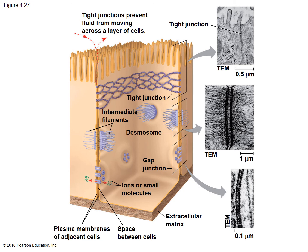Here we see all of these different connectors put together. You have the tight junctions, the desmosomes, and the gap junctions shown with where you could find each. They show how small ions or small molecules would move across the gap junctions. For the desmosomes, they show you the intermediate filaments that help make those up — again a type of cytoskeleton fiber. Last but not least, you get a picture of those epithelial cells, as mentioned, from something like the intestines. That's the end of this one — catch you on the next one.